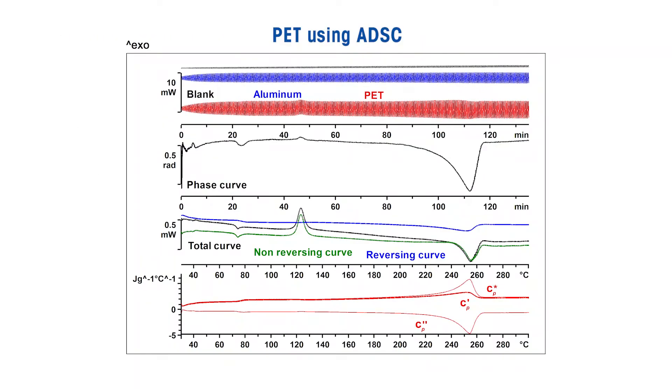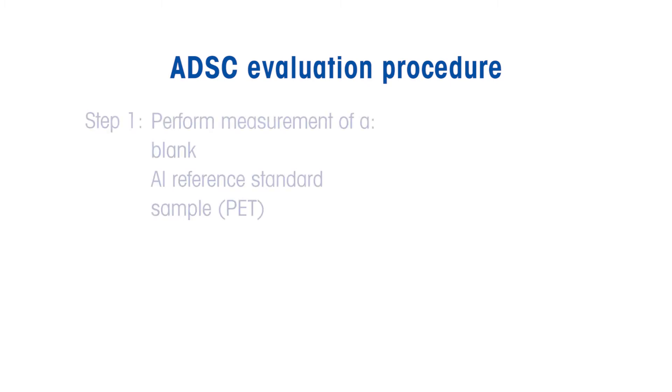In this video, I describe the ADSC evaluation method performed on a PET sample to illustrate the kind of questions ADSC can answer. This includes how to separate reversing and non-reversing phenomena and obtain accurate heat capacity values using aluminum as a standard. The procedure can be summarized in just three simple steps. First, perform measurements of a blank, an aluminum reference standard, and a sample.